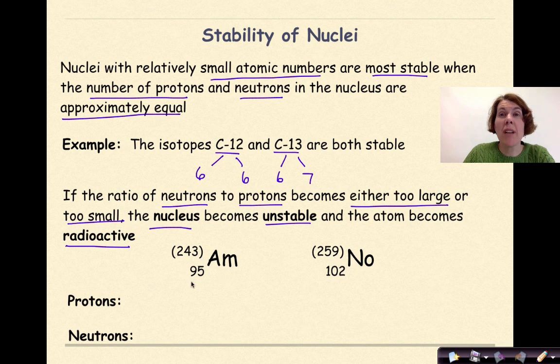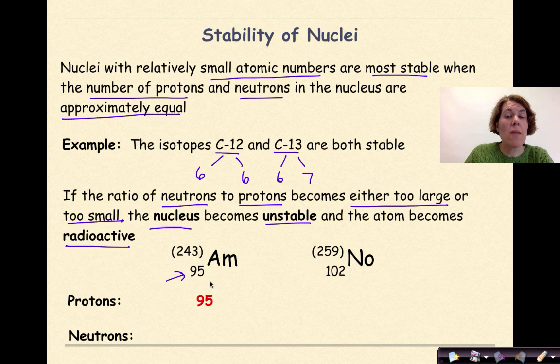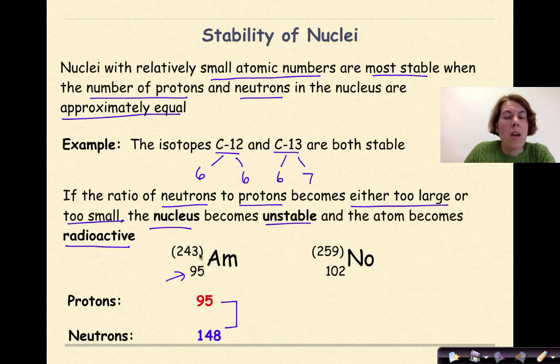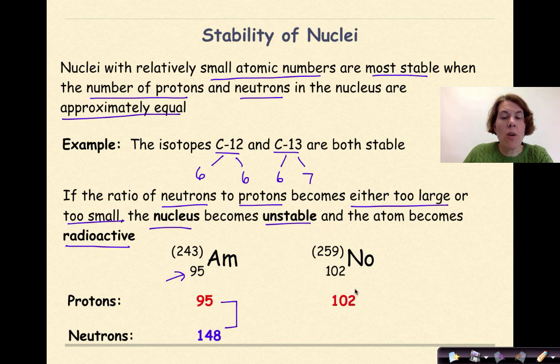So here I have americium 95. Number of protons, 95, because I see it right here. But if I take the difference between the atomic mass of 243 minus 95, I'm going to get 148 neutrons. That's a pretty big difference between the number of protons and the number of neutrons. And you might be saying, well Dr. English, what do these parentheses mean here? The parentheses mean they only have a general idea of the atomic mass since this particular element is so unstable. Let's look at nobelium 259. The number of protons will be 102, but the number of neutrons will be 157. Again, we see a very large difference between the number of protons and the number of neutrons, which makes this particular element pretty unstable.